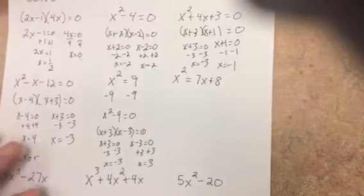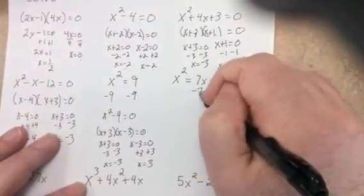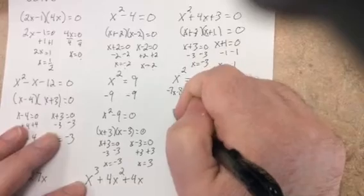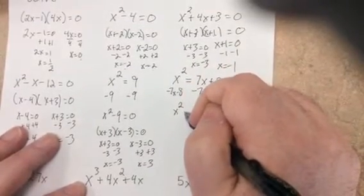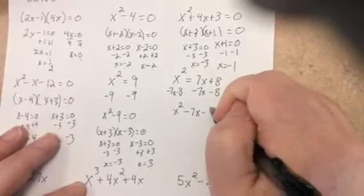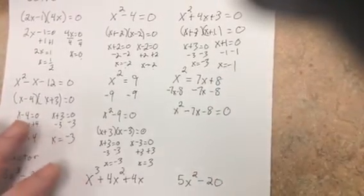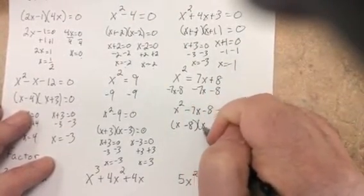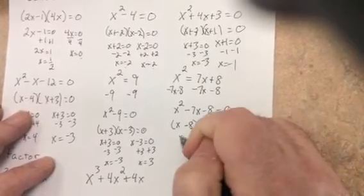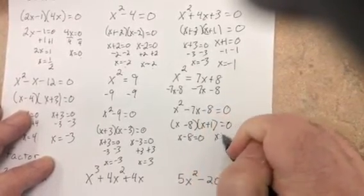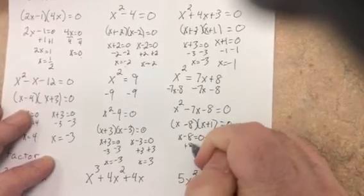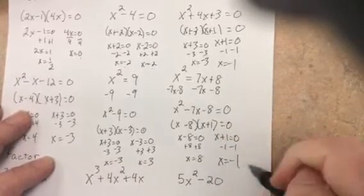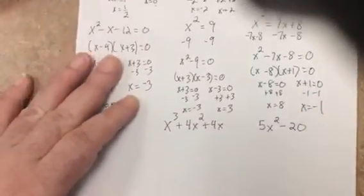Then this one—I'll bring it over a little bit. It's not equal to zero, so I'm going to subtract seven x to get zero, subtract eight. Now I cannot combine this with the x squared, I can just write it x squared minus seven x minus eight. Then I factor: x minus eight times x plus one. Set each factor equal to zero. Add eight, x equals eight. Subtract one, x equals negative one.